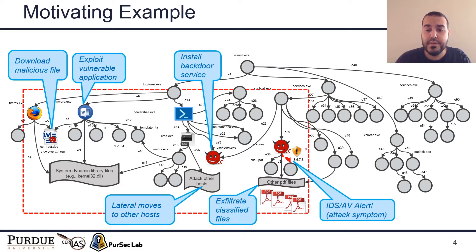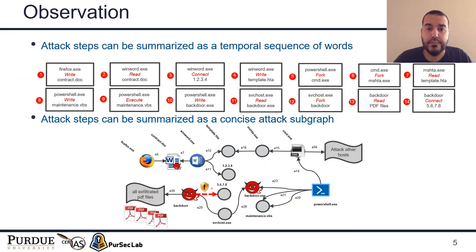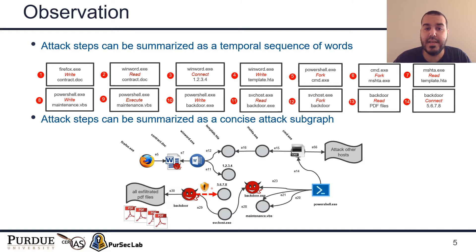Many state-of-the-art works run the analysis and report the findings of the attack investigation as an attack subgraph, as highlighted in the red dashed area on the slide. Our observation is that the high-level attack steps can be summarized and learned as temporal sequences of attack events, directly extracted from the constructed causal graph representing the audit logs. The attack story can be summarized as a sequence of attack events, and also as a concise attack subgraph like state-of-the-art works.